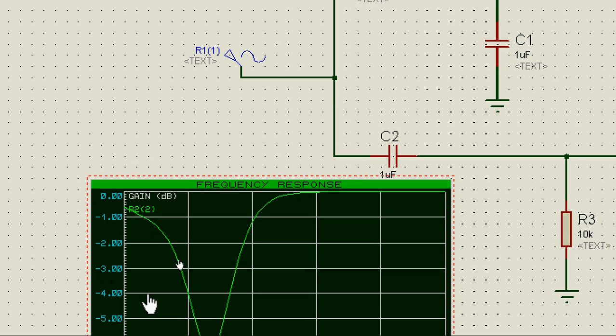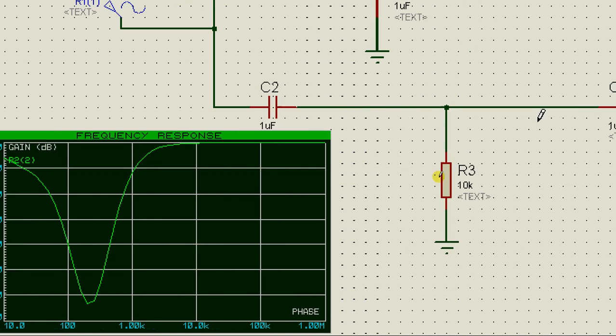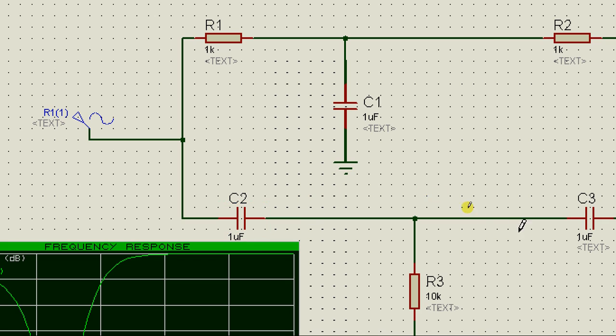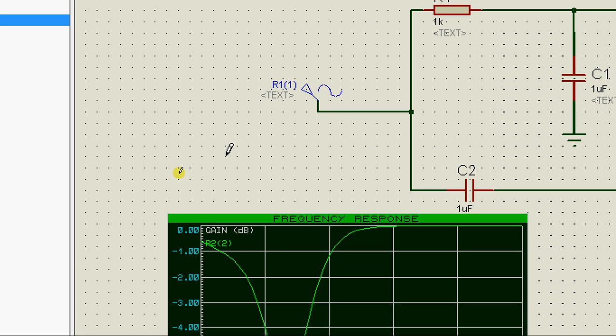You'll get something like this. Now what the band stop filter does is it blocks all frequencies in the range determined by the low pass filter and the high pass filter. It basically does the opposite of what a band pass filter does.